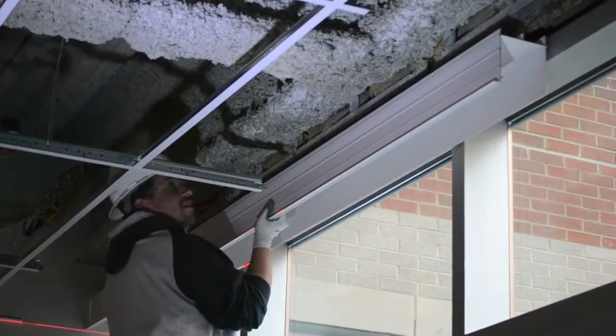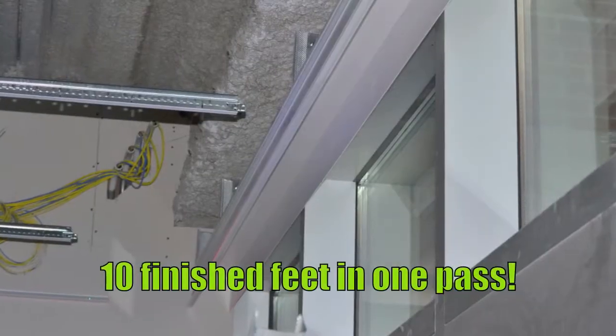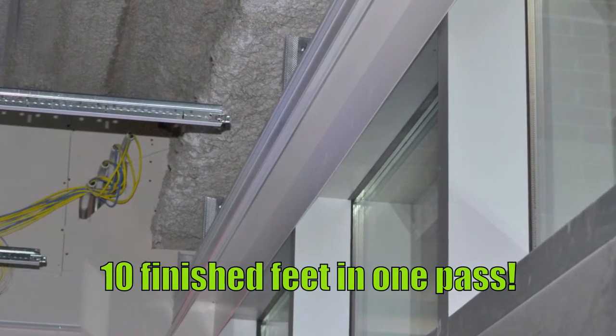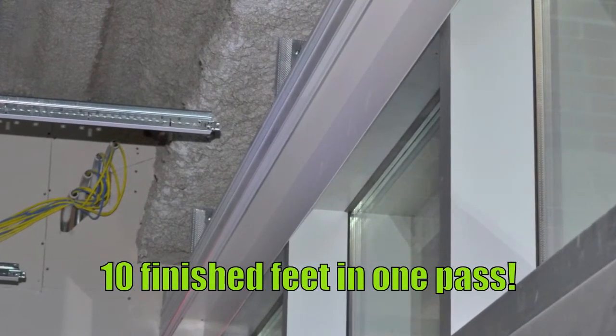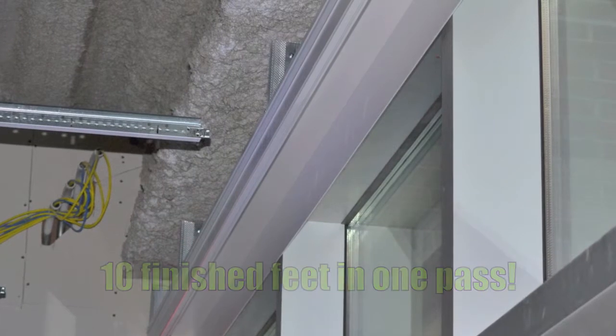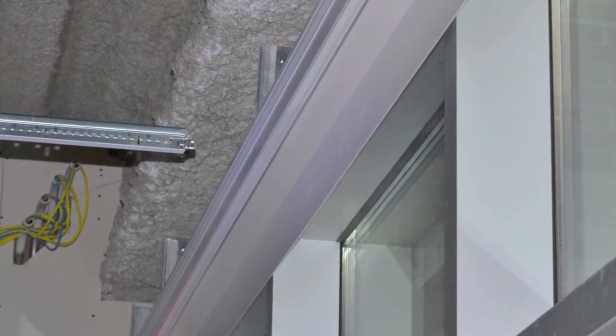You just saw 10 finished feet installed in a single pass. Armstrong building perimeters is an engineered extrusion complete with clips and accessories, which lead to a clean, consistent, custom visual in a standard product.